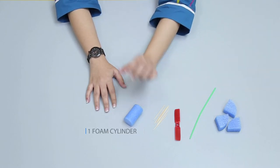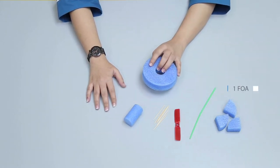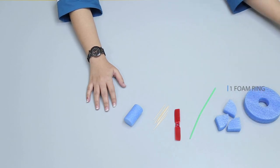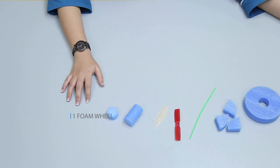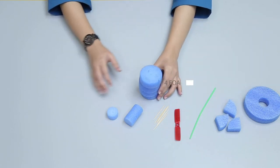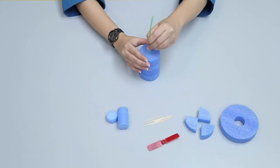One foam ring large with hole, one foam wheel circle small, four foam wheels. Push the four foam wheels through the plastic stick.